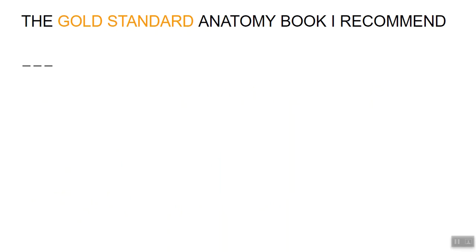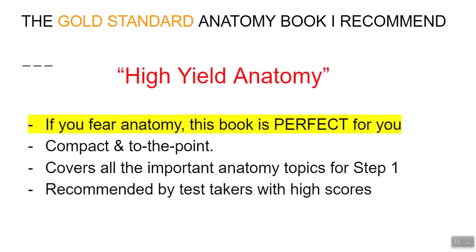But if you want to cover the remaining 30% and get a high score on Step 1, you need one more resource for anatomy. The book I highly recommend for Step 1's anatomy is called High Yield Anatomy. It is compact and to the point, covers almost all the important anatomy topics for Step 1, and is recommended by test takers who got great scores. I highly recommend getting this book if you're looking for a super high score.